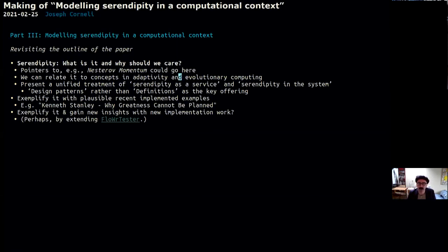As I've said today, we could relate the concept of serendipity to concepts in adaptivity and evolution. And in particular evolutionary computing, I showed some examples. We could present a unified treatment of serendipity as a service and serendipity in the system, which was something we kind of introduced in our paper, but we use the serendipity as a service as a kind of throwaway concept in order to set up the idea of modeling serendipity in the system.